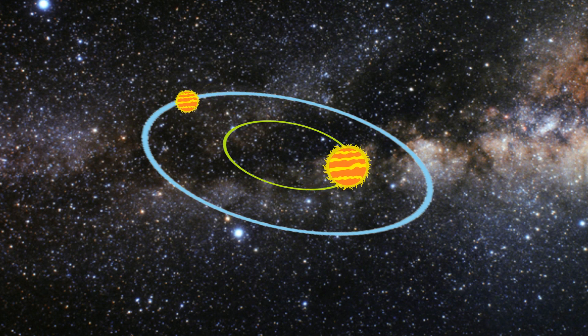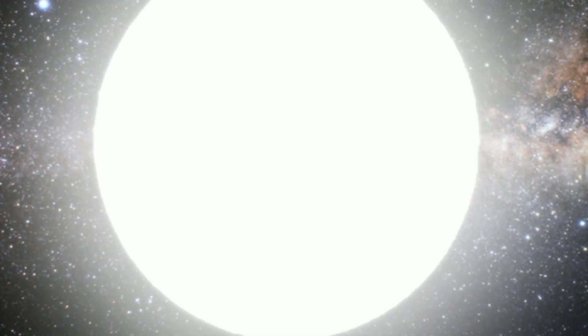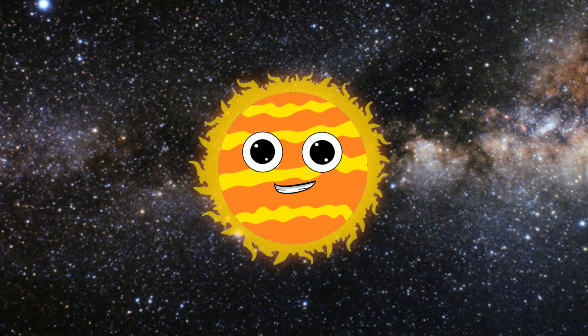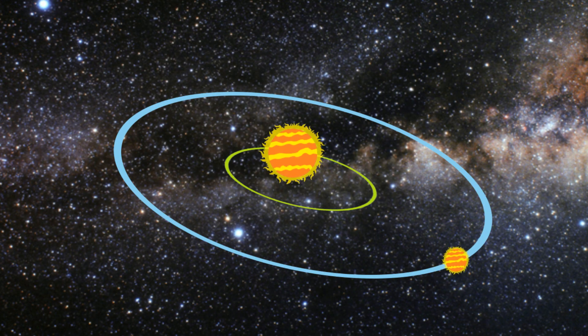These are two stars, but if their orbits are like this, that would be bad because then the two stars will crash if they get too close. But if you look up in the sky at a dark time, you will see one star, even though there are actually two stars.